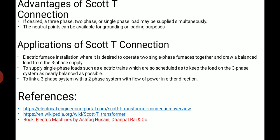The applications of Scott T connection are the electric furnace installation where it is desired to produce or to operate two single phase furnaces together and draw a balanced load from three phase supply. Second is to supply the single phase loads such as electric trains which are so scheduled as to keep the load on three phase system as nearly balanced as possible. And to link a three phase system with two phase system with flow of power in either direction, the Scott T connection is used.